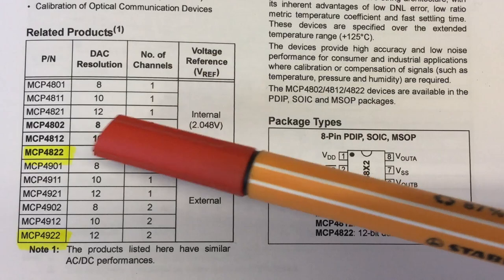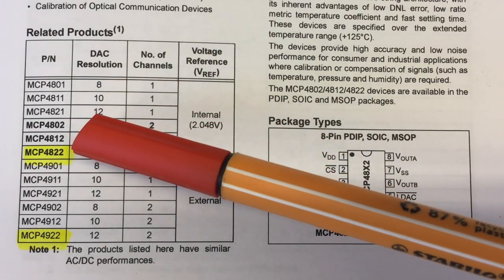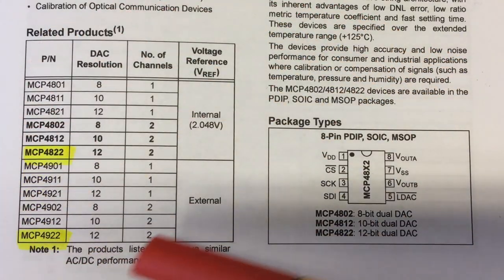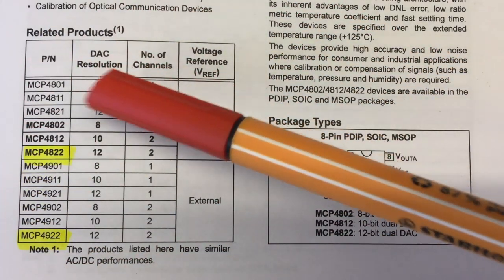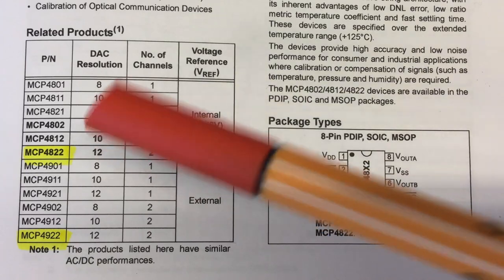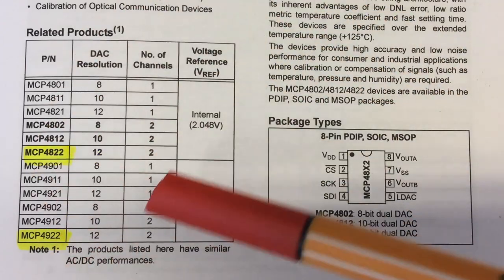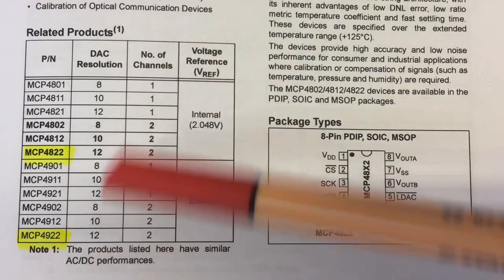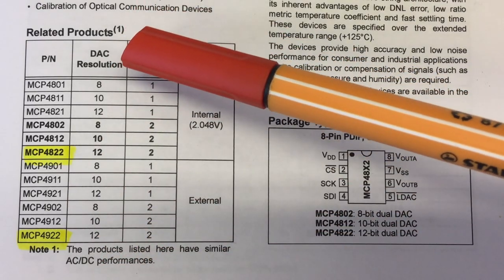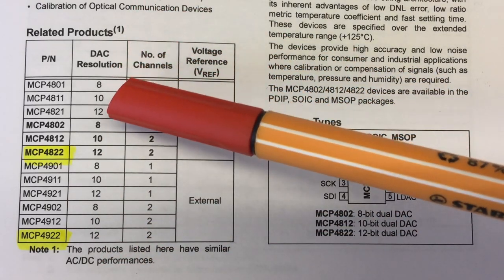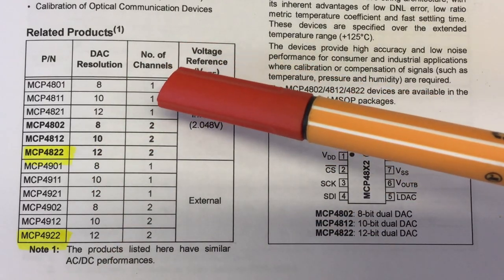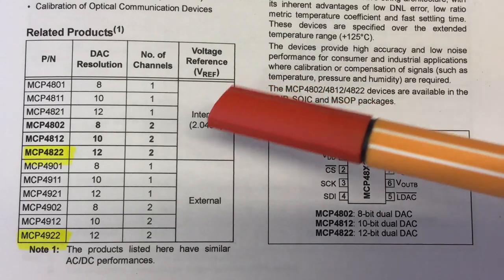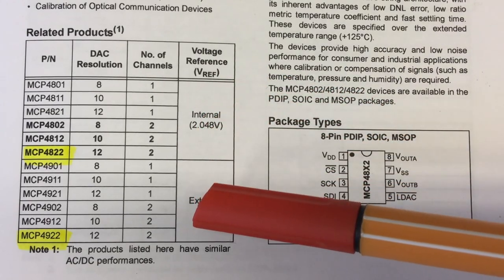Before we start playing around with the MCP4822 and 4922, let's have a look at the whole family of digital analog converters from Microchip. And it is a big family consisting of 12 different products. So, you get resolutions between 8, 10, and 12 bits. You get single channel and dual channel converters.